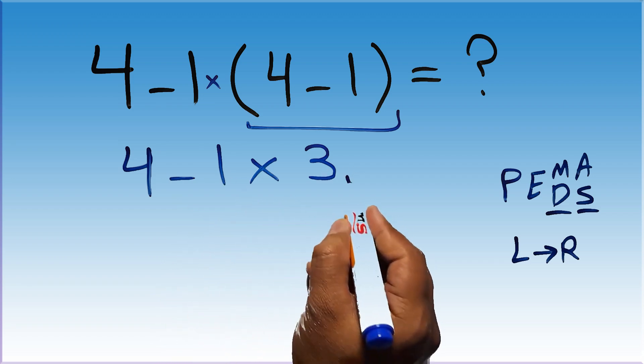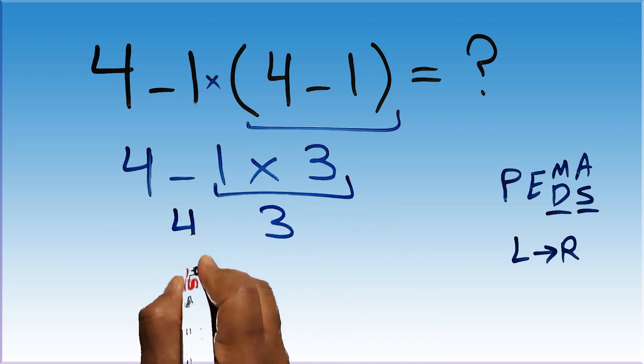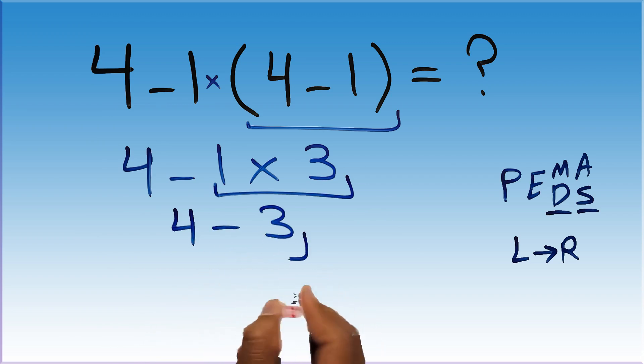1 times 3 gives us 3. So 4 minus 3, which equals 1. And this is our final answer to this problem.